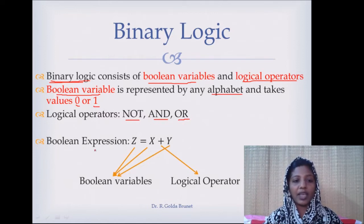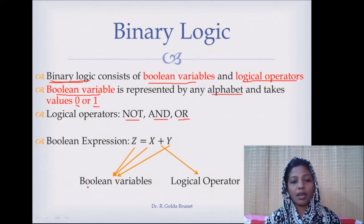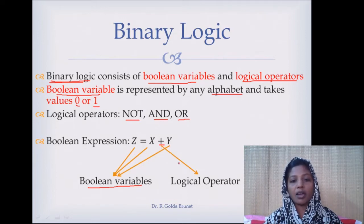We can write a Boolean expression like this: Z is equal to X OR Y. This plus symbol here stands for logical OR. Z, X, and Y all represent Boolean variables, and this plus stands for the logical OR operator.